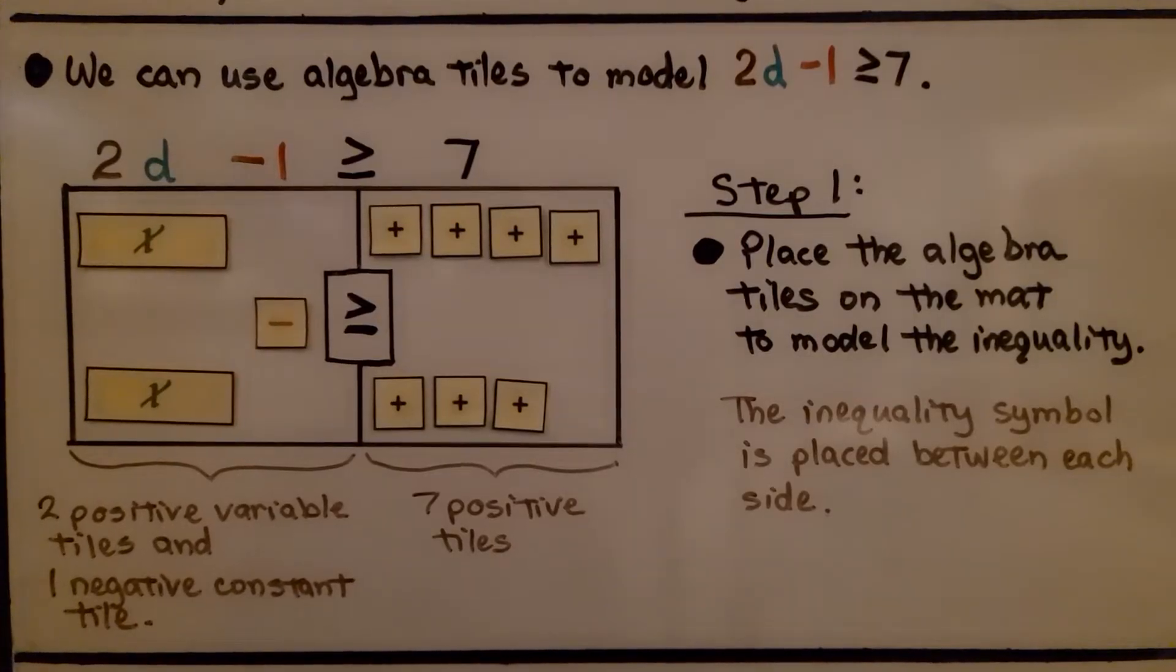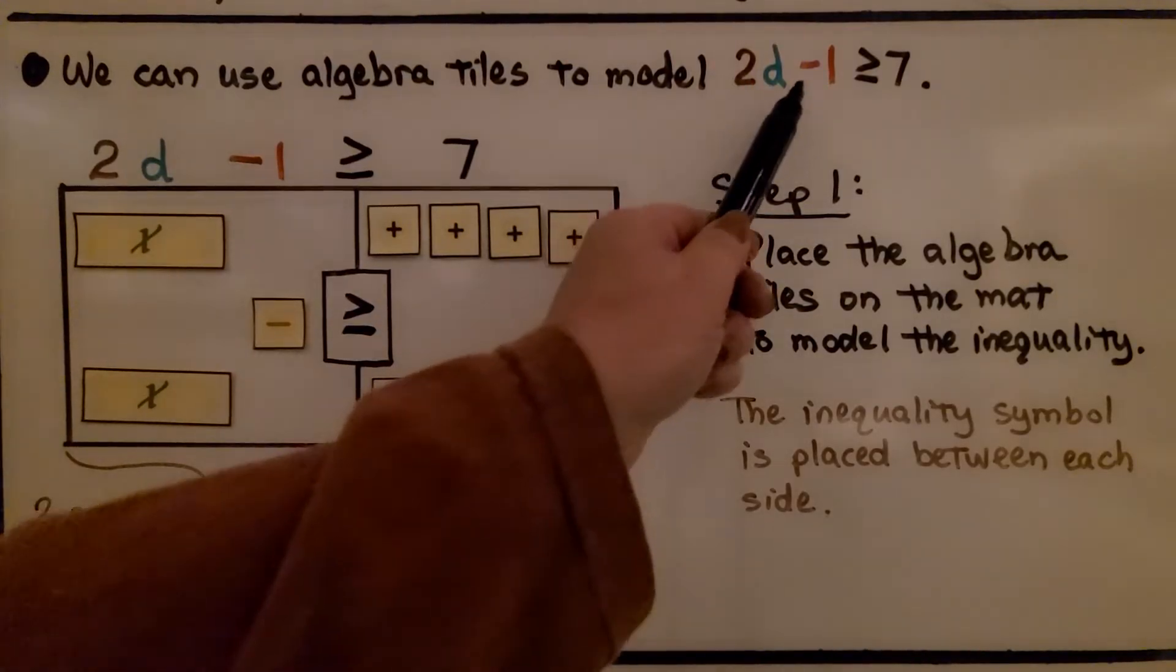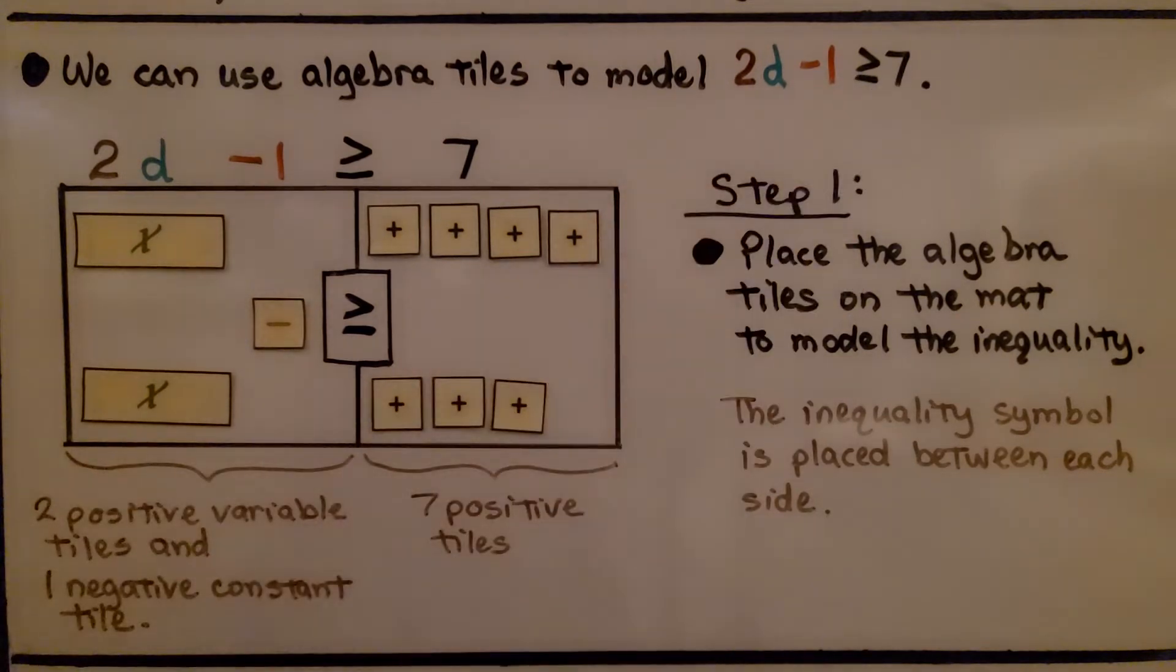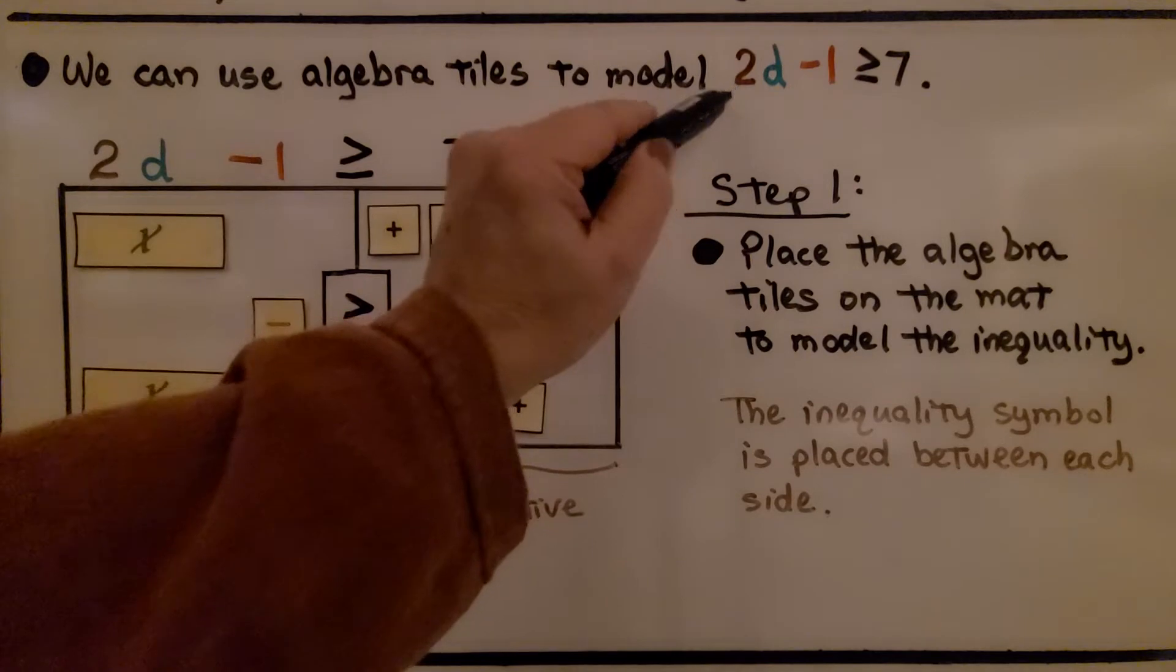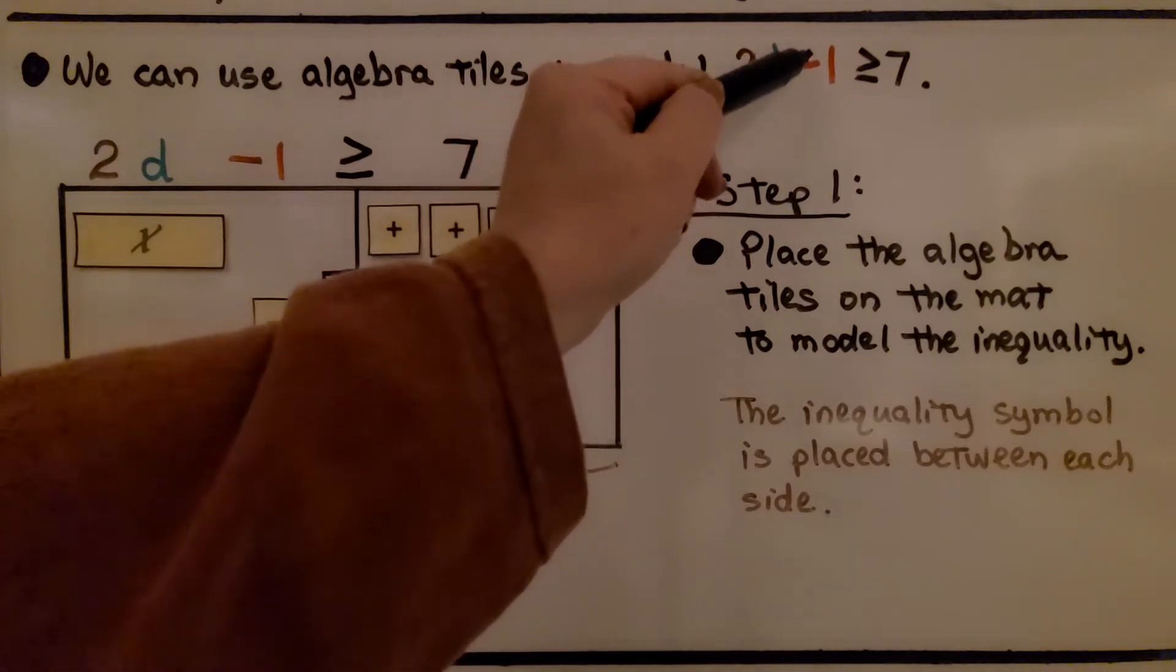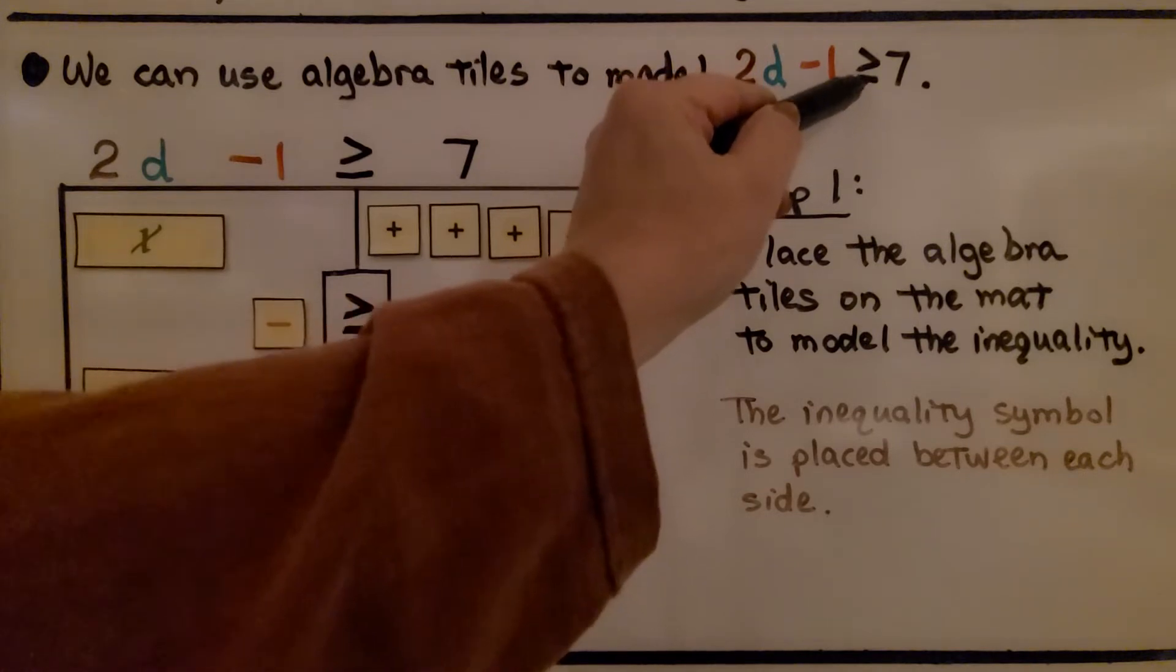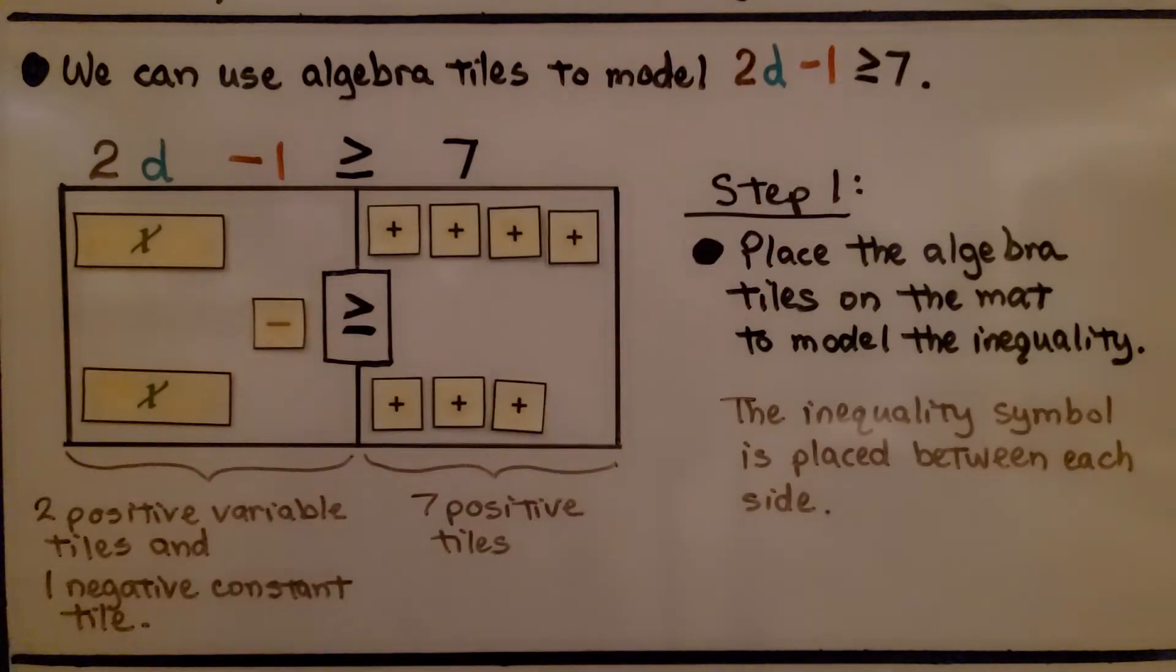We can use algebra tiles to model 2d minus one is greater than or equal to seven. The two is our coefficient, the d is our variable, this minus one is our constant. We have our inequality symbol greater than or equal to, and we have a seven.